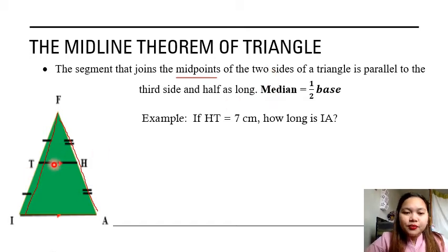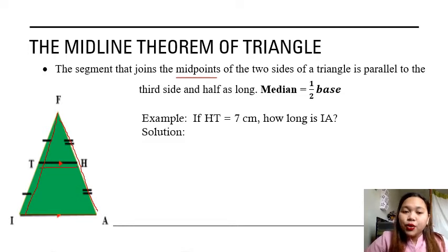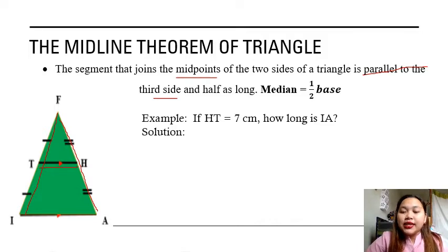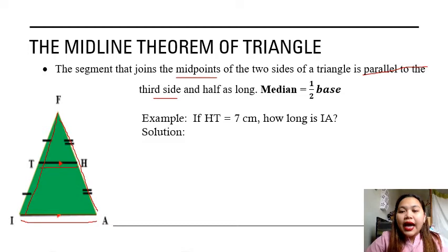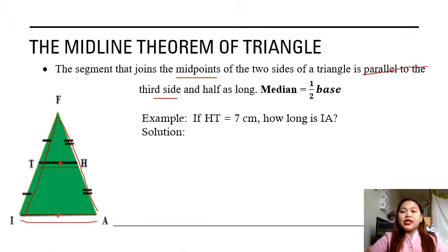That will be the median. Therefore, the median here is segment TH. Segment TH, or the median TH, is parallel to the third side. The third side or the base is side IA. Your median is parallel to the base. In this case, median or segment TH is parallel to base IA. That's the midline theorem of a triangle. Now, to compute the measurement of the median, the formula will be: median is equal to one half times the measurement of the base.